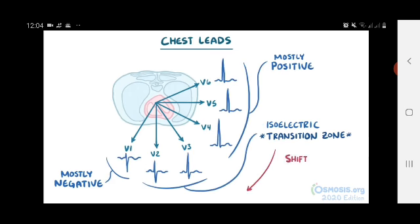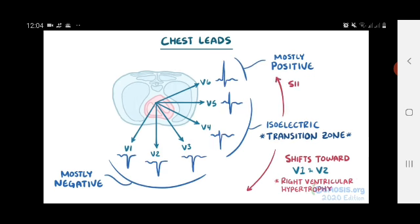If that transition zone shifts toward V1 or V2, then it suggests that the heart might be rotated to the person's right, which can happen if the right ventricle is hypertrophied. On the flip side, if leads V5 or V6 look isoelectric instead of positive, it suggests that the heart might be rotated to the person's left, which can happen if the left ventricle is hypertrophied.